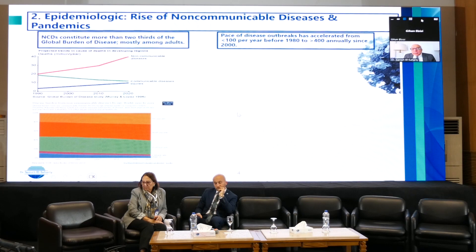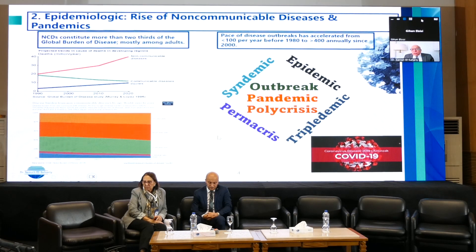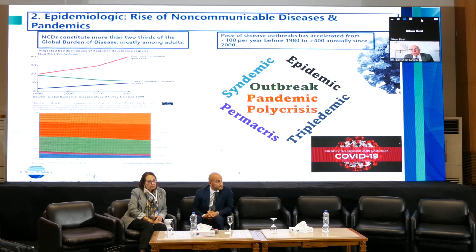The second characteristic of the epidemiological transition is pandemics. The pace of disease outbreaks has accelerated from less than 130 before 1980 to about 400 annually since 2000. We've seen many outbreaks and pandemics in the last 20 years — endemic, perma-crisis, epidemic, and economic crisis — all results of the COVID-19 pandemic.